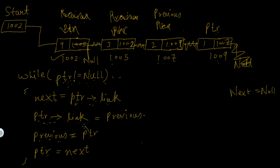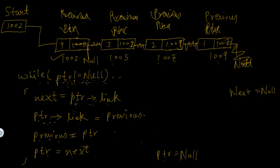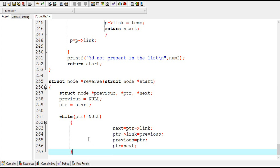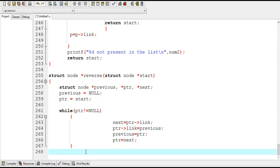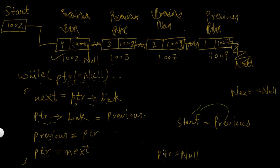Now previous will be assigned the value of PTR, so previous now means this last node. PTR will be assigned the value of next and the value of next is null, so PTR will now be equal to null. Then this while condition is checked again and this time PTR is equal to null, so the while condition becomes false and the while loop terminates. Control moves to the next statement: start will be assigned the value of previous, and the value of previous is 1009.